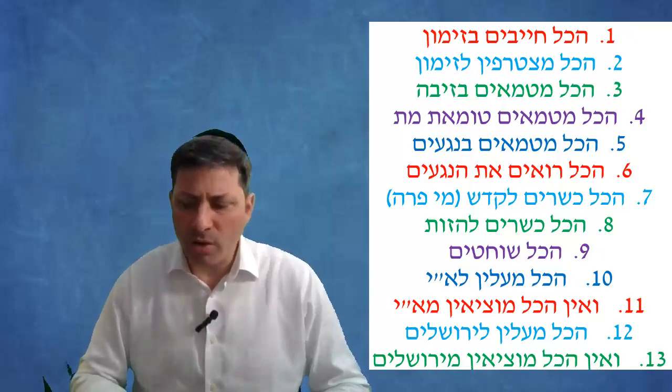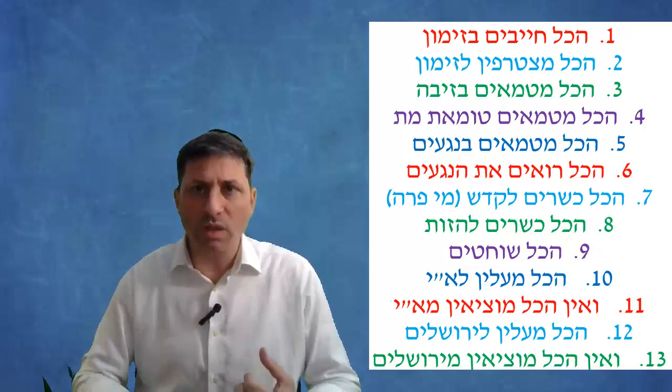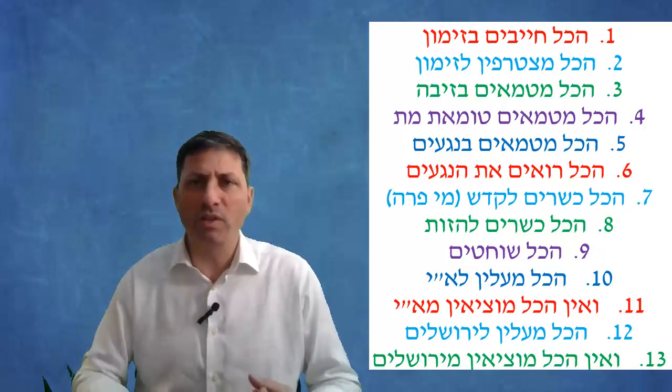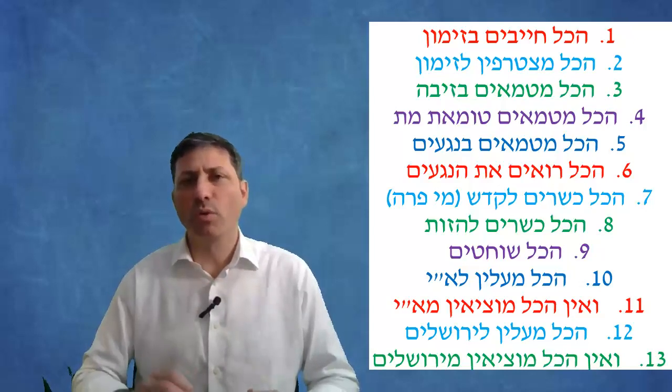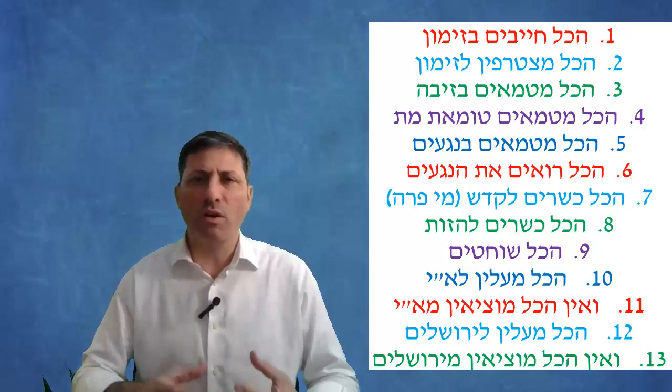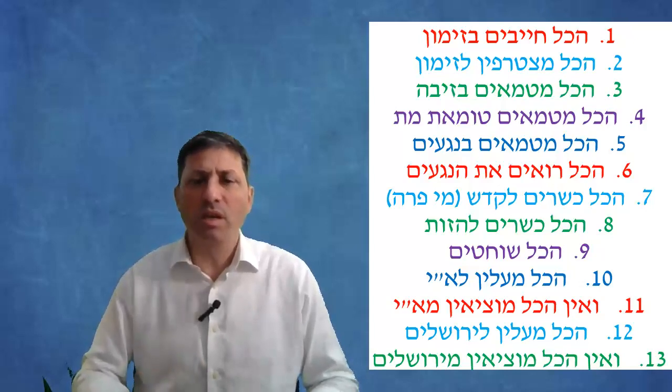It says hakol shochatim - everybody can take a shechita. One comes to include a Kusi and one comes to include a mumar. We're talking about a mumar l'teavon, and somebody that went off to derech because of taavos. But such a person, if given the choice of eating kosher meat he'll eat kosher meat if it's not too too much of a tircha. If you give him a knife without any pgimaos he will shecht it kosherly.